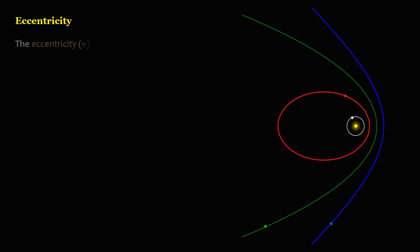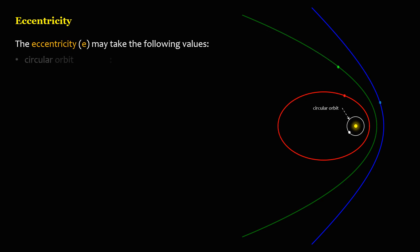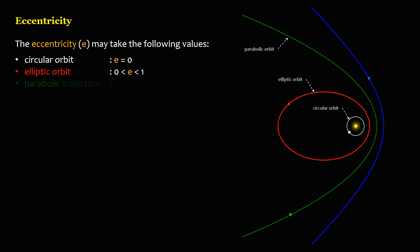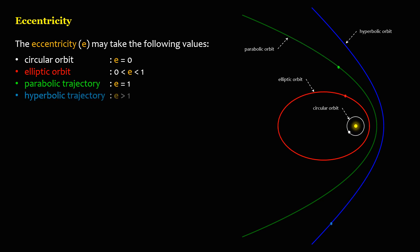The eccentricity, E, may take the following values: Circular orbit — E equals zero. Elliptic orbit — E greater than zero, less than one. Parabolic trajectory — E equals one. Hyperbolic trajectory — E greater than one.